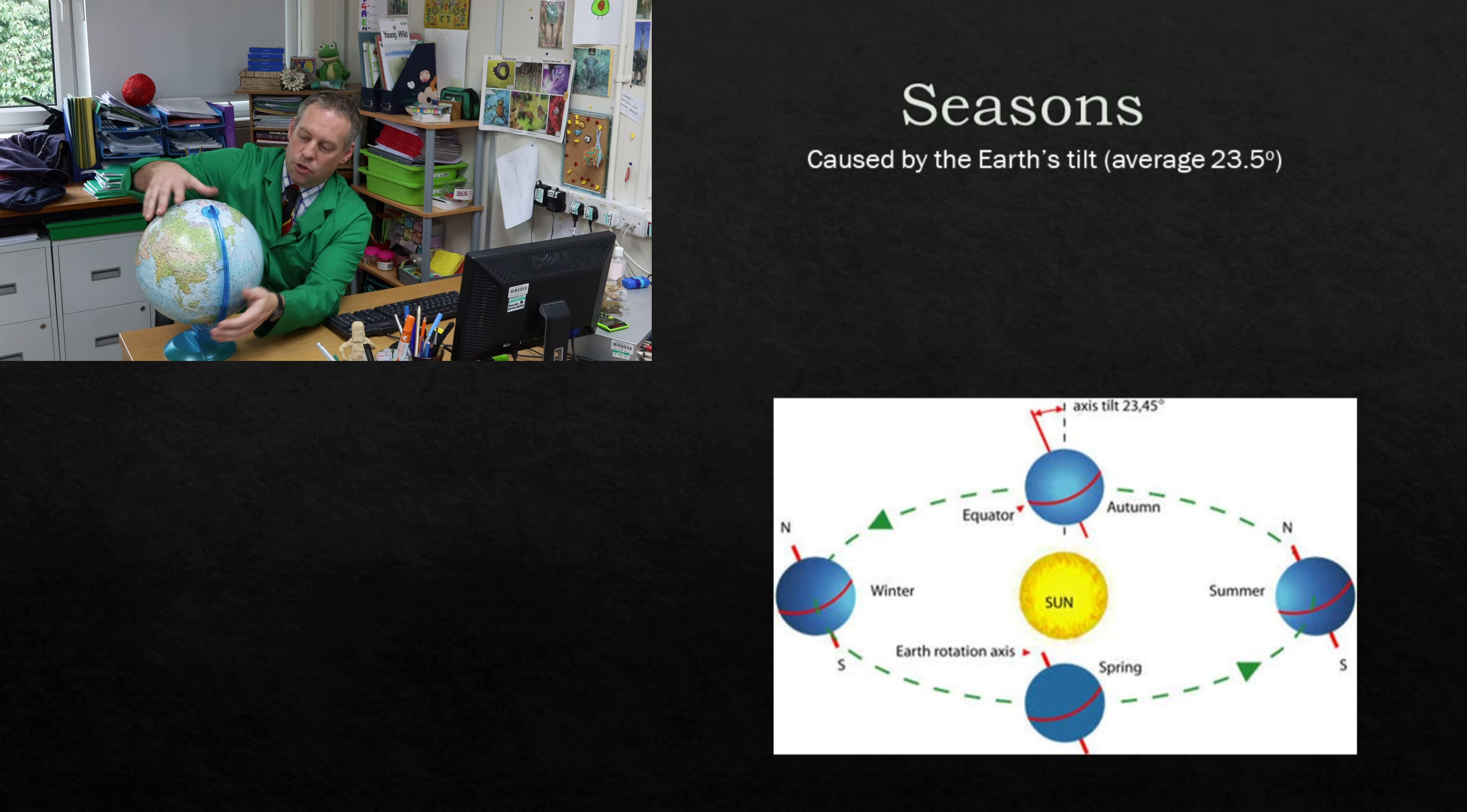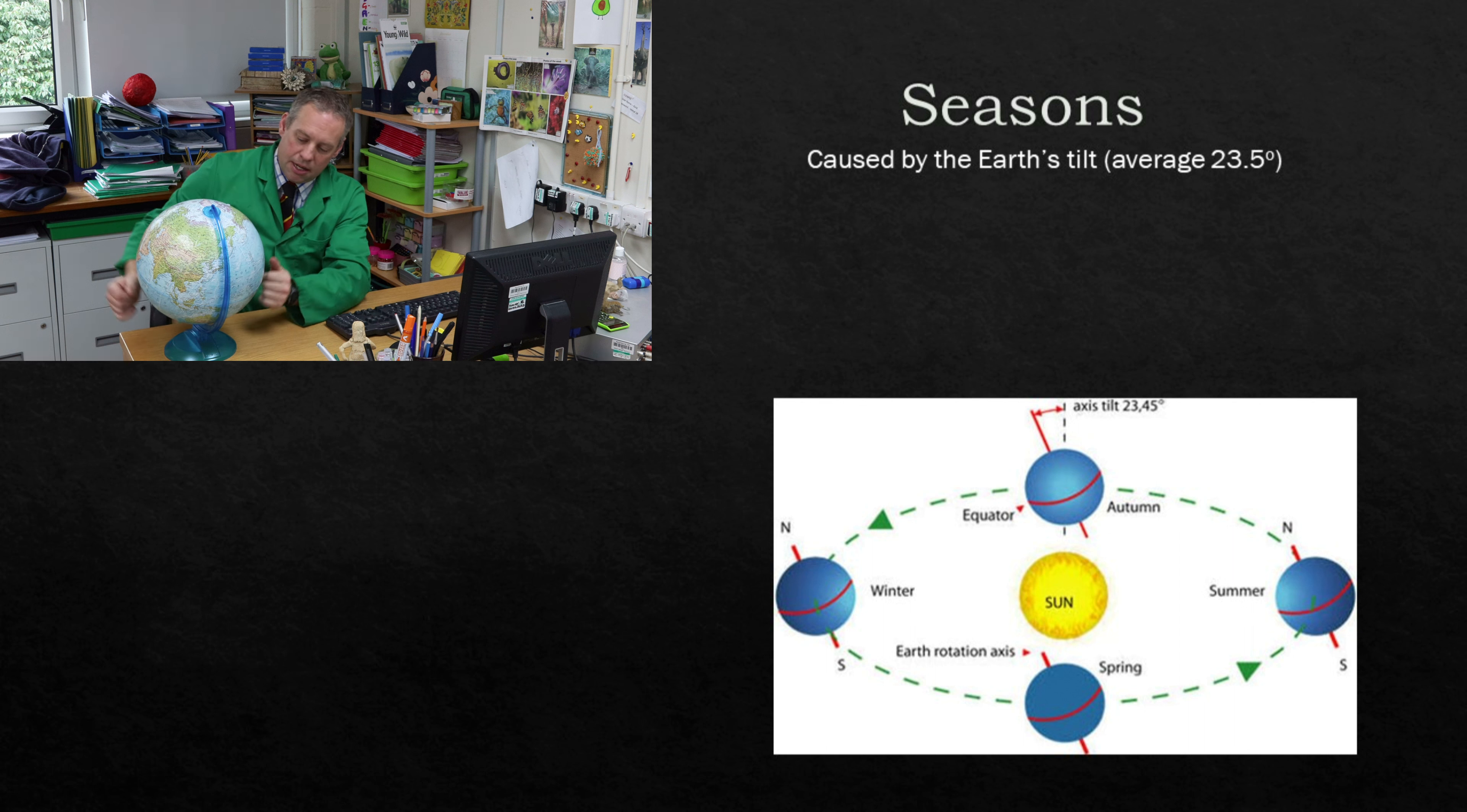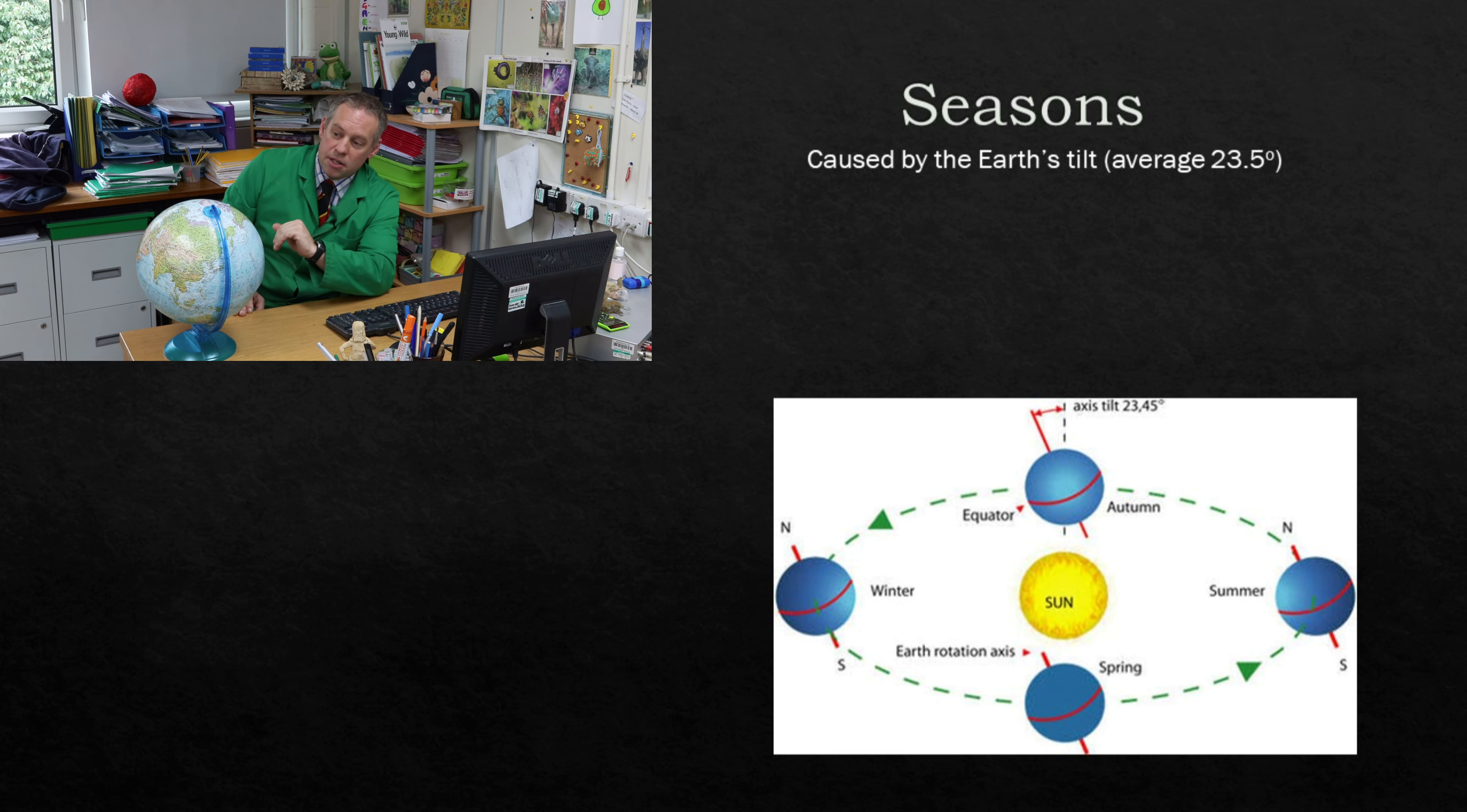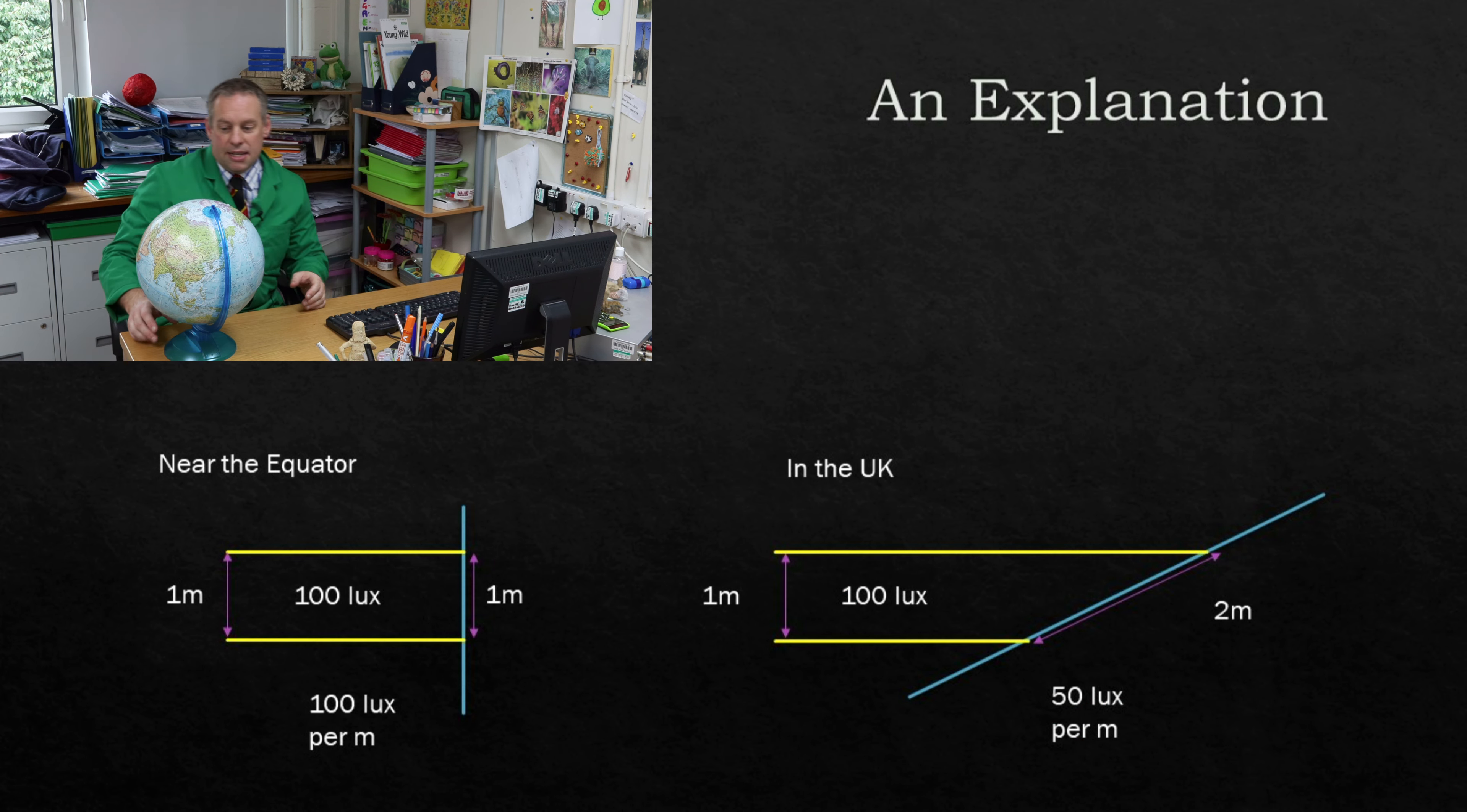If I rotated it and changed it you can see now the northern hemisphere is exposed to the sunlight whereas the southern hemisphere is less exposed to the sunlight. And that is going to make a huge difference to the temperature of the surface of the Earth.